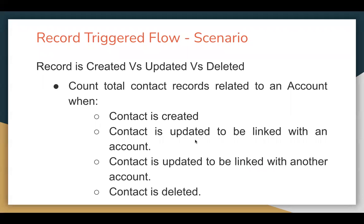Now I'm going to use the Update scenario. In case of update, we have two scenarios. First is a contact is updated to be linked with an account — right now a contact is available but not connected with any account, its Account ID lookup is blank. If we fill that, we are connecting that contact with an account. Later I will explain how we handle linking a contact to another account — in that case, one account will have a decreased count and one will have an increased count. Right now I'm showing if a contact is updated to be linked with an account.